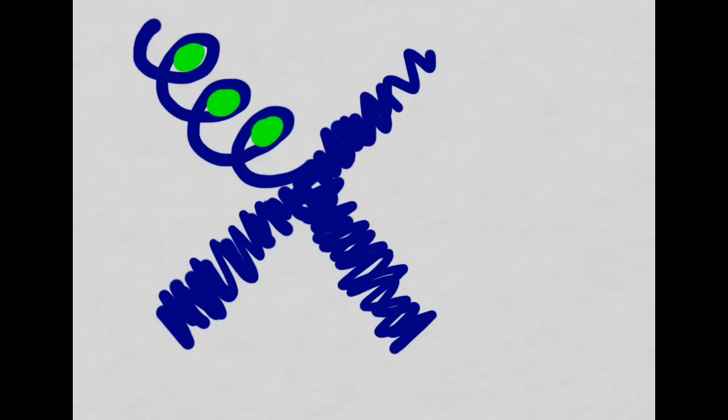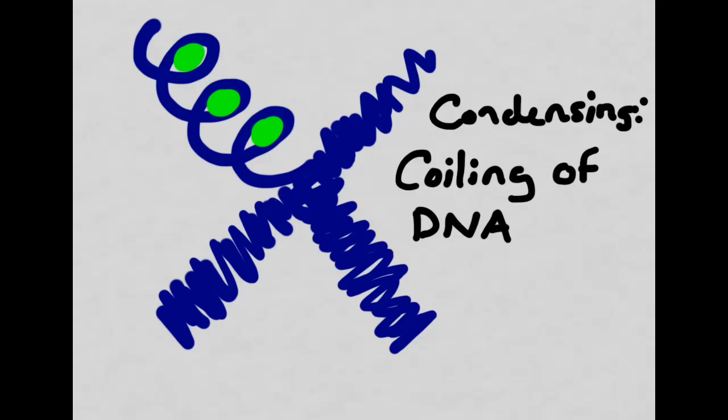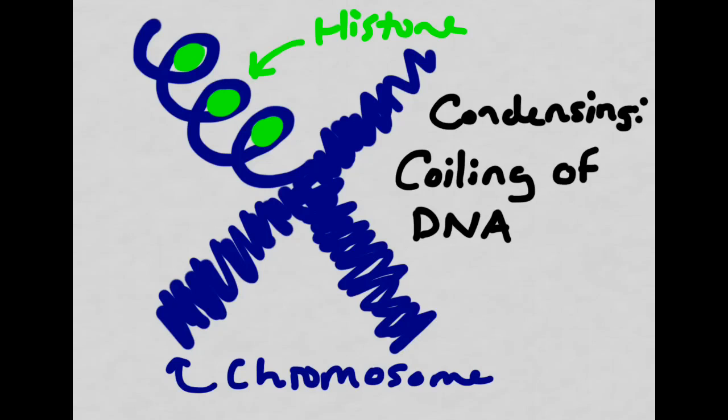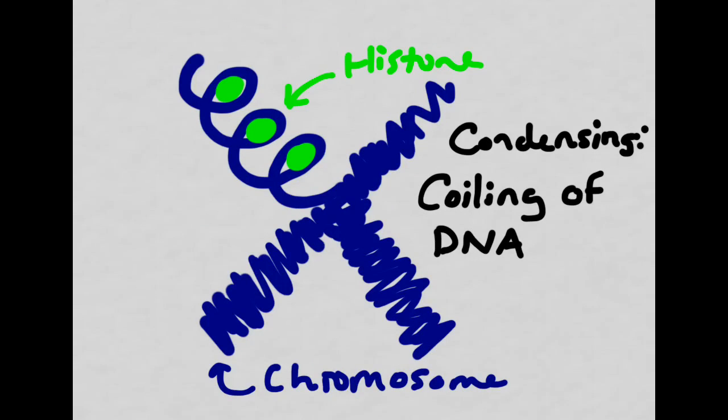With 3 billion base pairs in the human genome, carrying that around would be extremely cumbersome. This is why we use this method called the chromosome. Rather than being one long, tangled molecule, the DNA does something that we call condensing. Condensing refers to the coiling up of the DNA molecule into a structure called a chromosome. The DNA molecule is twisted up and coiled around protein structures called histones. This means that the DNA molecule is very tightly packaged, and it makes it much easier for it to be moved around. We will be learning a lot more about how the DNA coils and uncoils itself when we begin talking about replication.